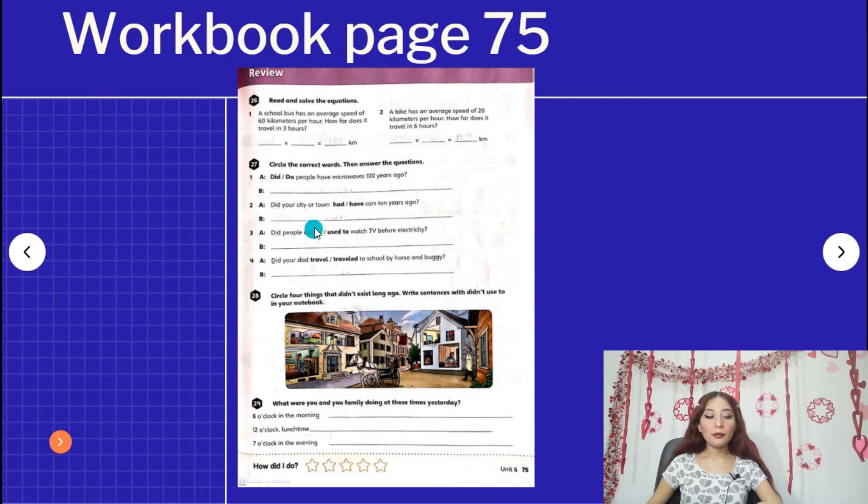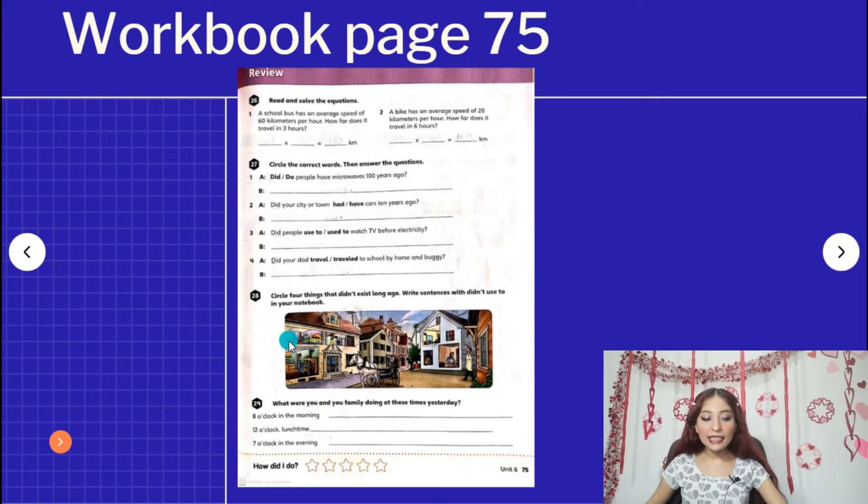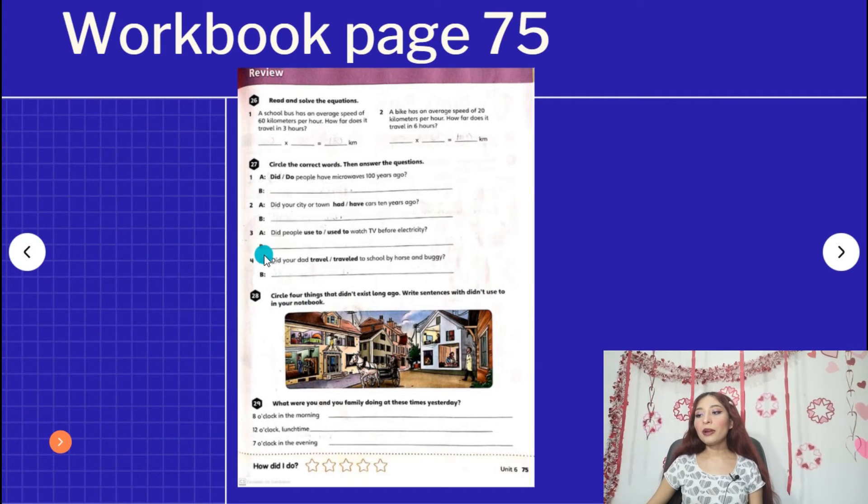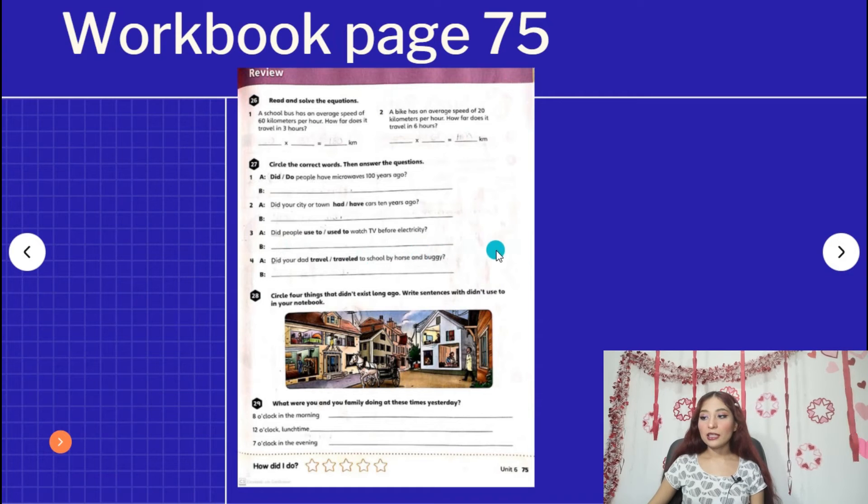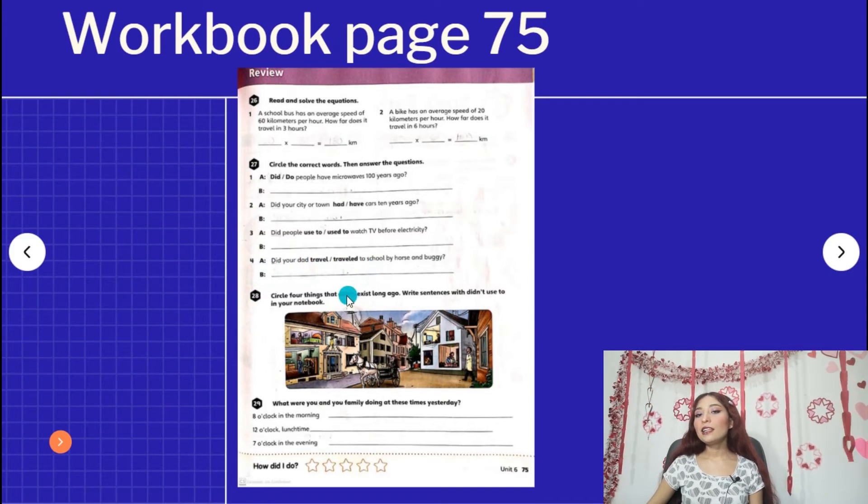Remember the structure, you're going to circle 'have' or 'had.' You can say yes it did or no it didn't. And number three: did people use to or used to watch TV before electricity? Yes they did or no they didn't. Did your dad, did your dad travel to school by horse and buggy? You circle 'traveled' or 'travel,' and you can say yes he did or no he didn't.